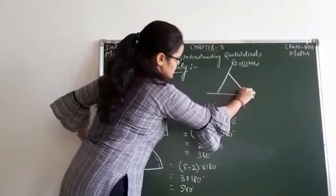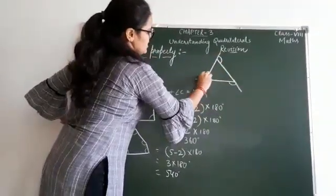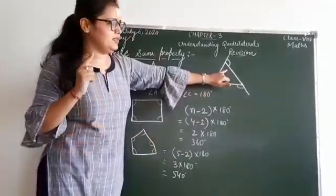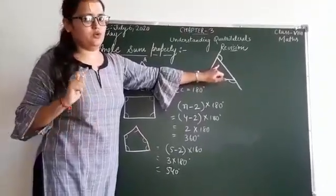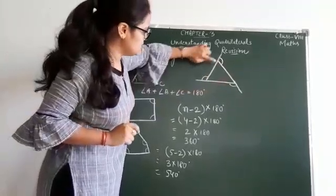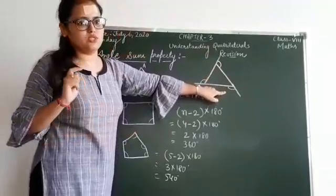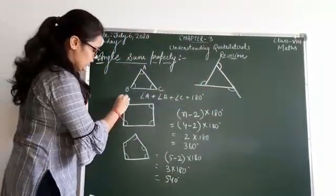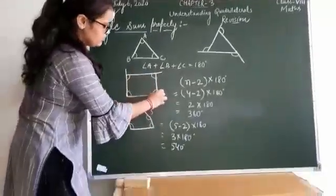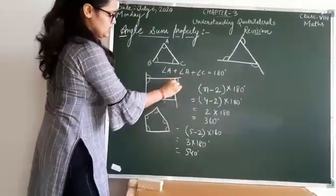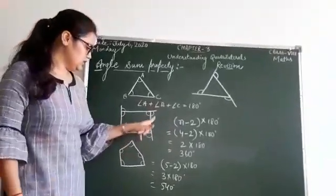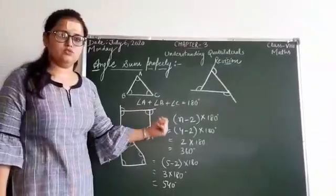Here are the exterior angles. I have drawn a triangle — if there are 3 interior angles, then there will be 3 exterior angles too. The sum of these 3 exterior angles equals 360 degrees. The same applies to a quadrilateral: if there are 4 interior angles, then there are 4 exterior angles also, and the sum of the exterior angles of a quadrilateral is also 360 degrees.